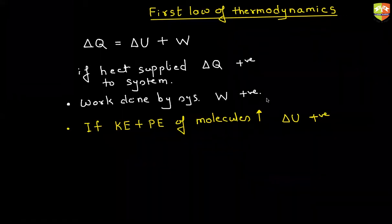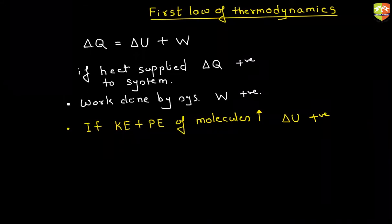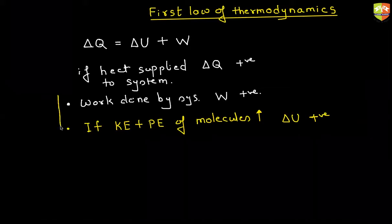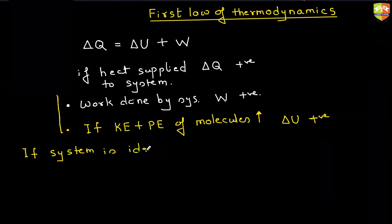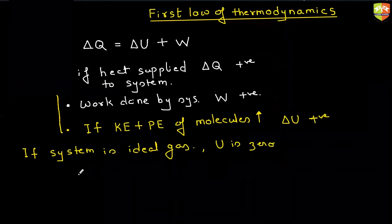So energy can be increased by just changing the state itself. But when we talk about the ideal gas, this is true for all the objects. Doesn't matter whether it is a gas or solid or liquid, anything. Now, if we talk about gas, if the system is ideal gas, then potential energy is zero. Potential energy is zero because potential energy is because of the interaction between the molecules. So only kinetic energy is present. So potential energy is a function of temperature only for the ideal gas.